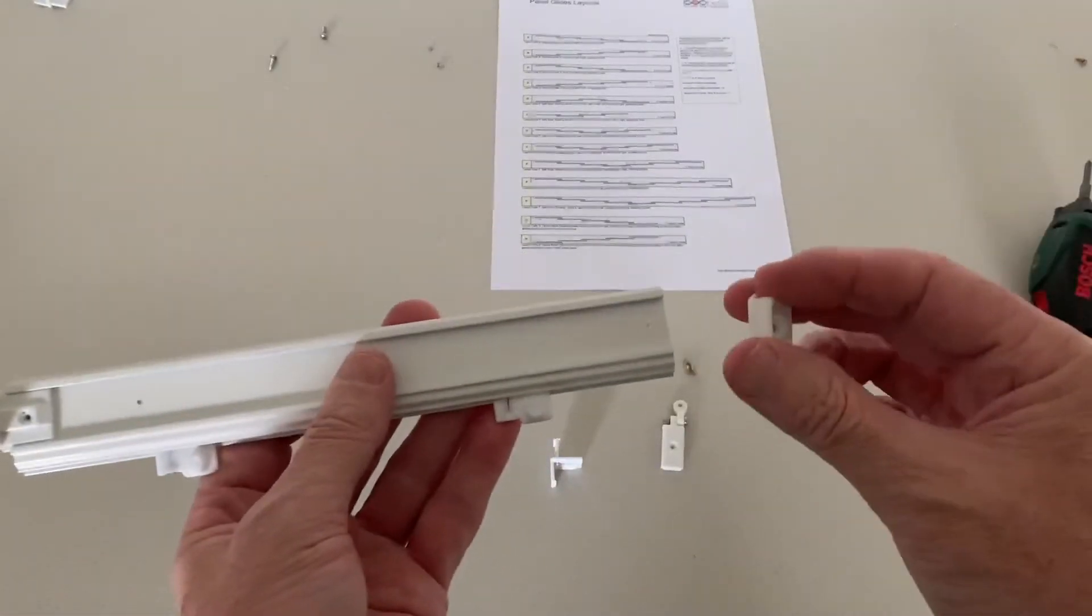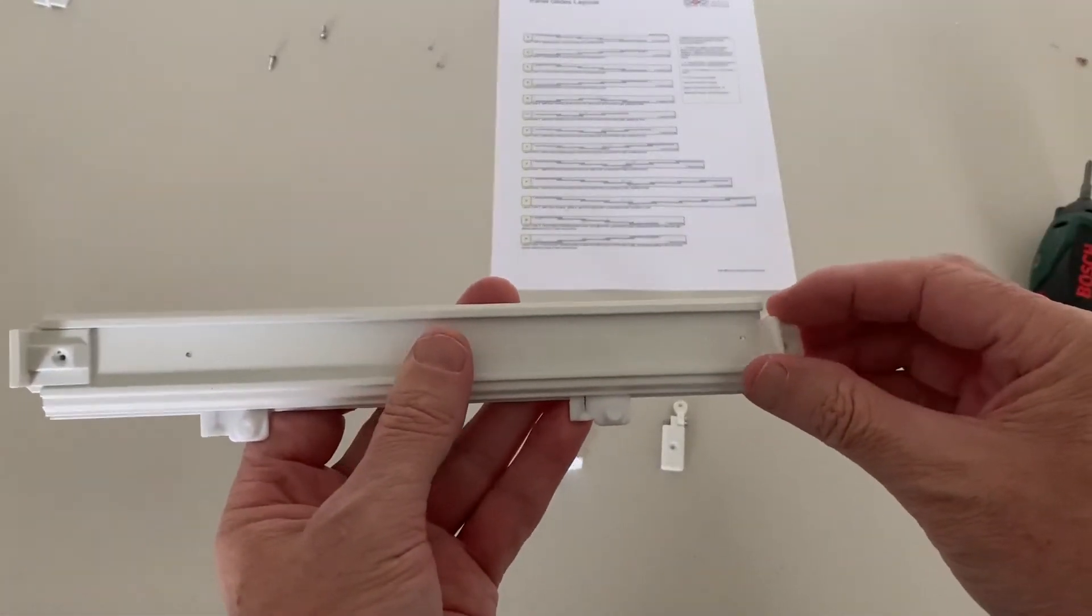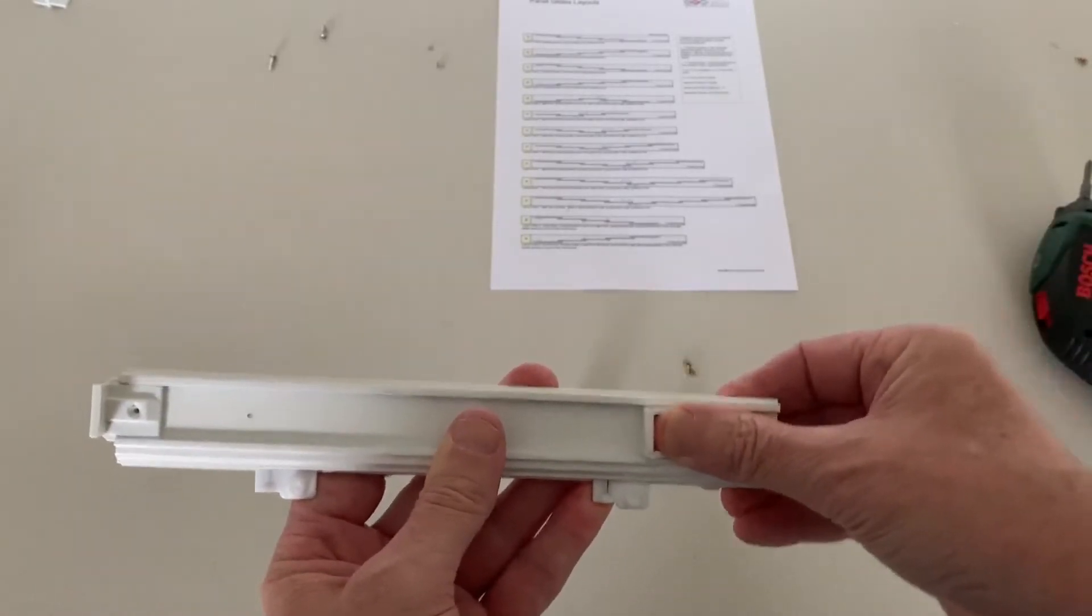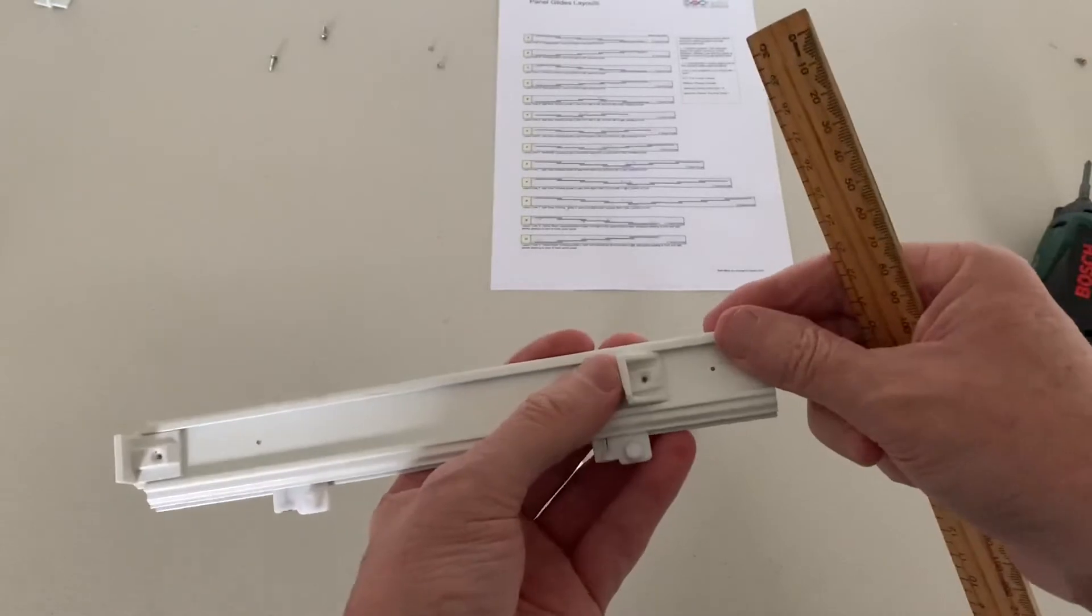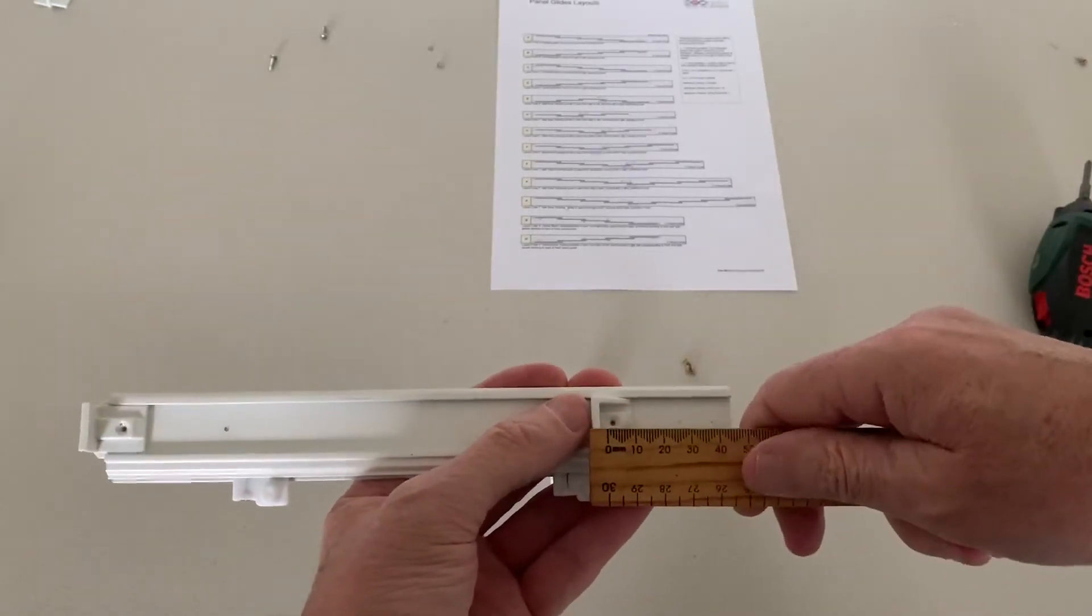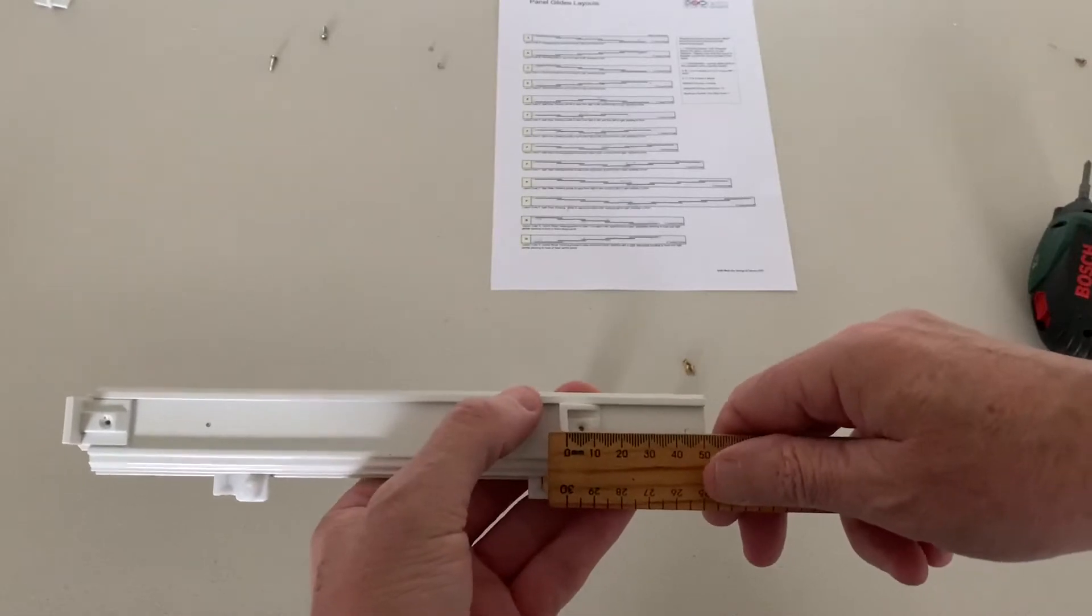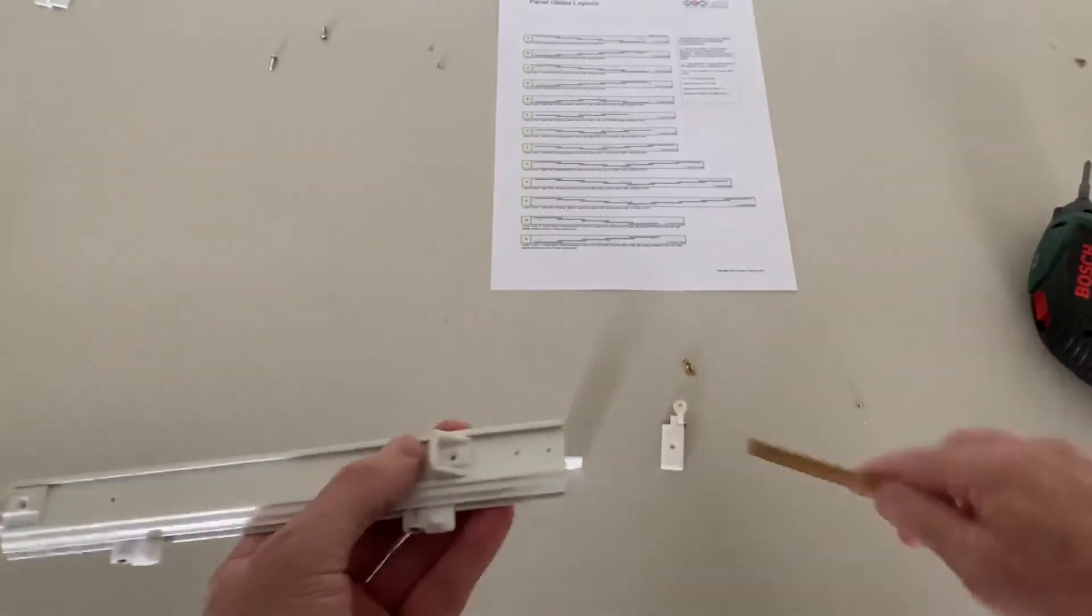Now if you wanted to do a L-stopper, depending which way you're facing, the L-stoppers want to be about 50 mil over from the end, because you want your fabric overlap at about 50 mil. So put it at about 50 mil.